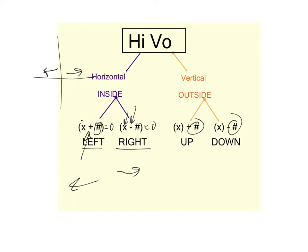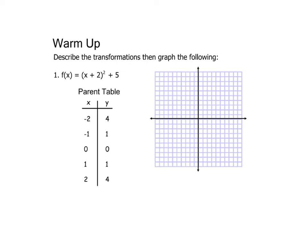As a warm-up, we're describing a transformation: we've got the function (x + 2) squared. The parent function here would have been x squared. We've got a plus 2 built in, and then a plus 5 on the outside.